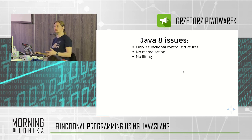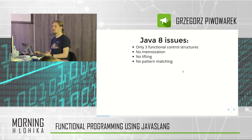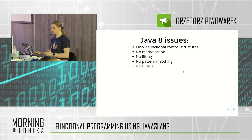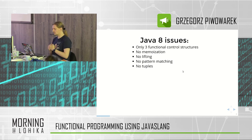There is no function lifting. Function lifting is a process of changing partial functions — functions that might throw exceptions — into total functions, which always return some result for every given input. There is no concept of pattern matching introduced to Java. Pattern matching is like a very powerful switch-case on steroids. Still no tuples in Java 8, and we still need to use very simple GitHub projects or Apache Commons if we want to connect two objects together.